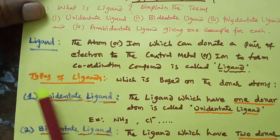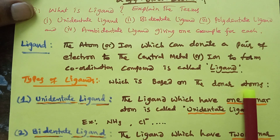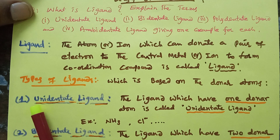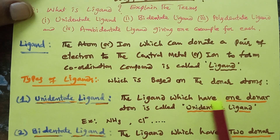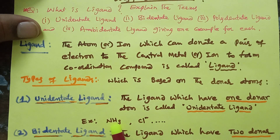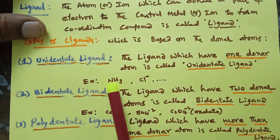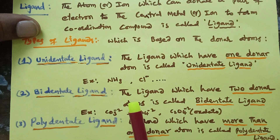Types of ligands are based on the number of donor atoms. The first type is the unidentate ligand. A ligand which has one donor atom is called a unidentate ligand. Examples are ammonia, chloride, and bromide. In ammonia, the nitrogen atom donates a pair of electrons to the central metal atom or ion.